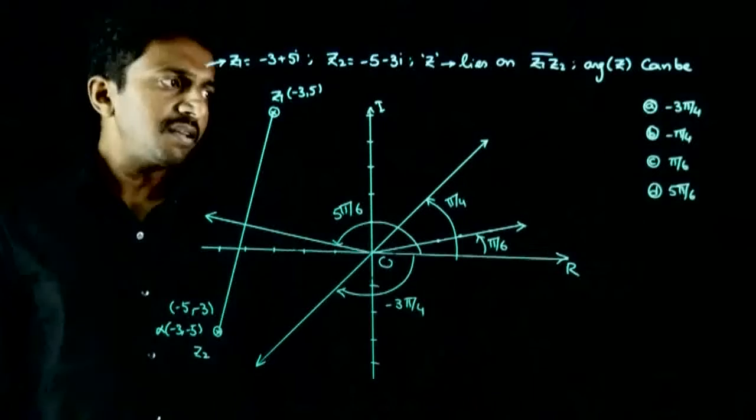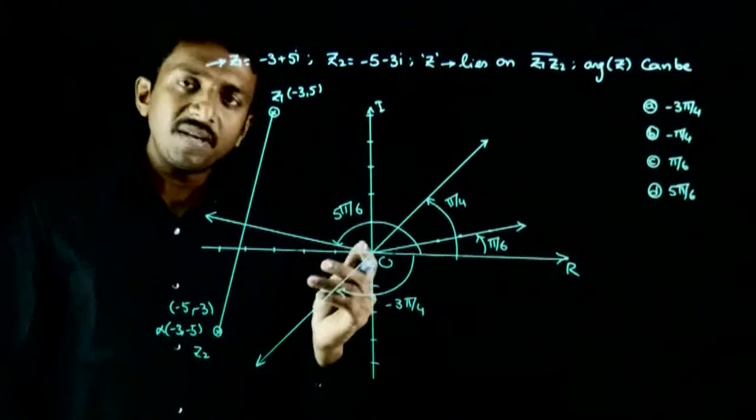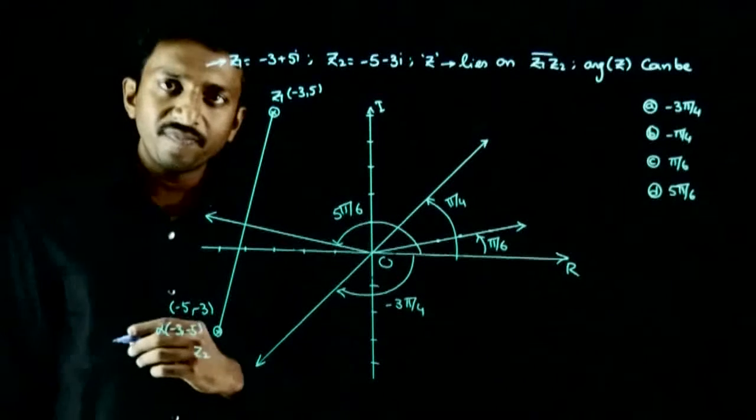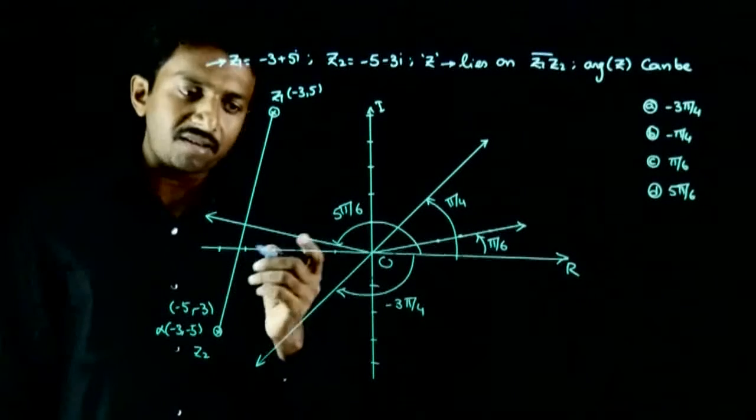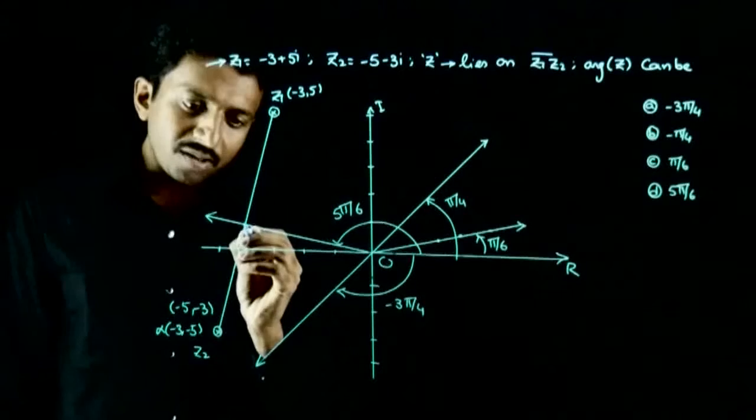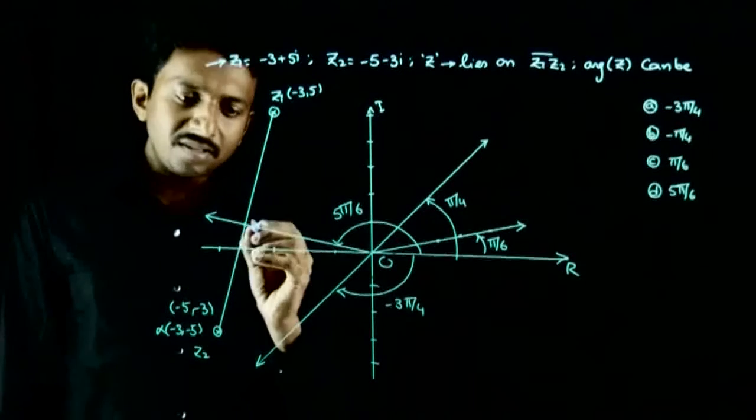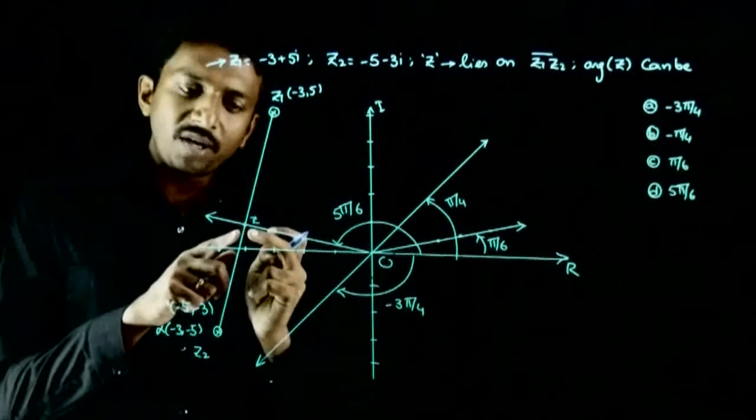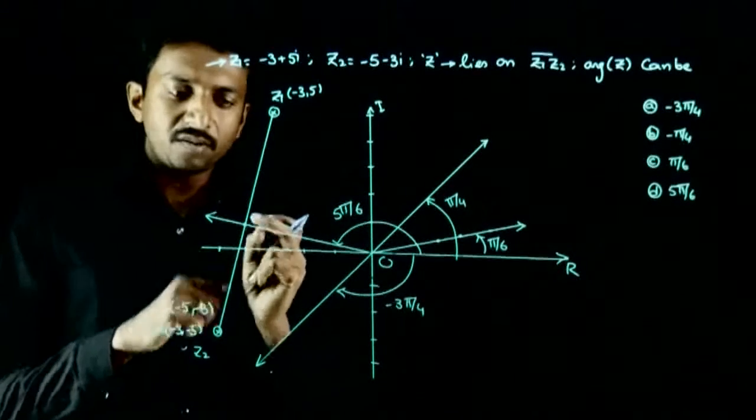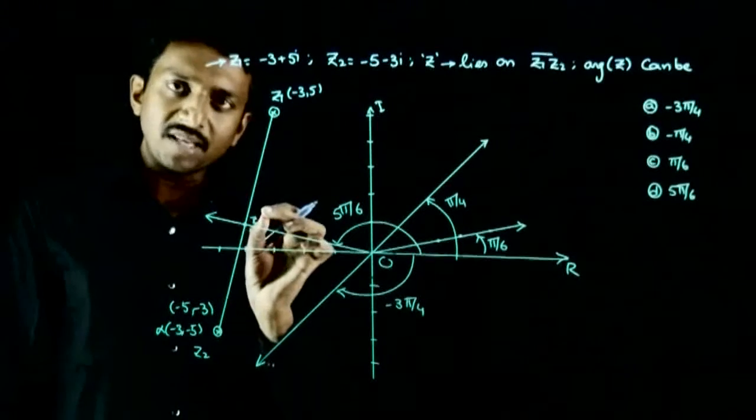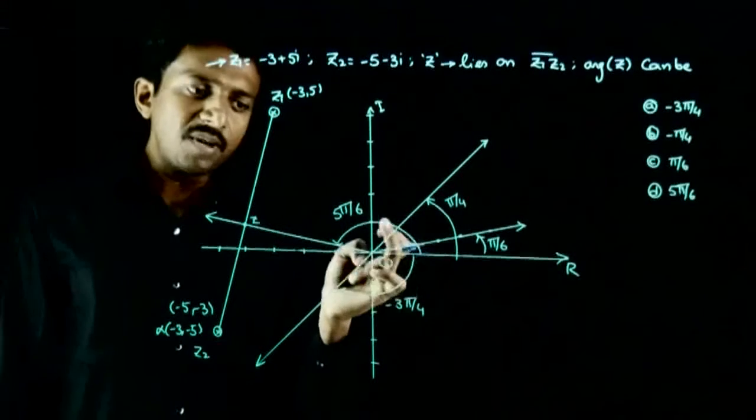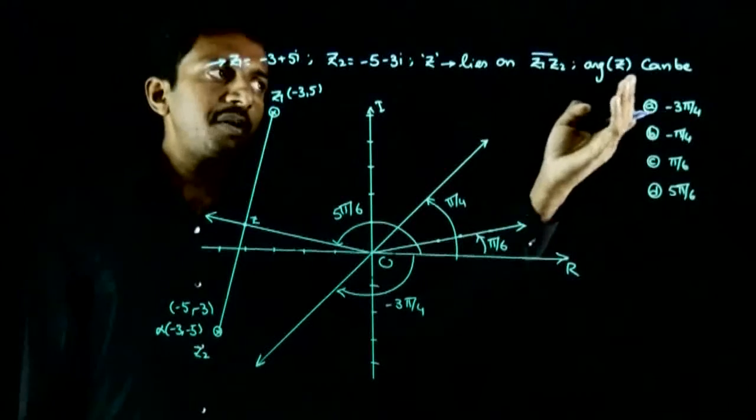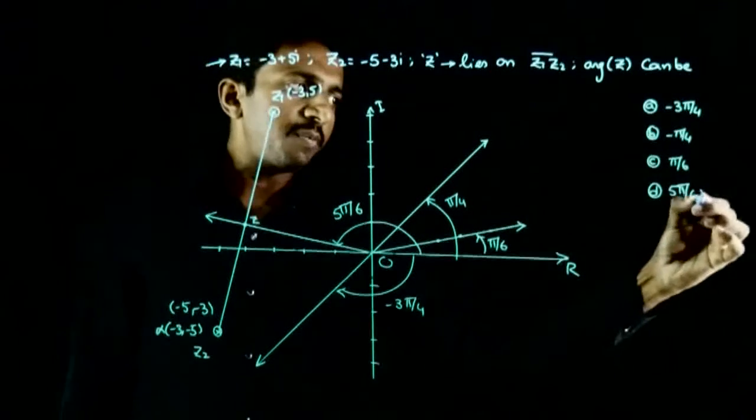Lastly, check 5π/6. The ray corresponding to argument 5π/6 will look something like this. You can clearly see there is one point on this line segment z which also has an argument of 5π/6. On this line, you can find a point whose argument is 5π/6.